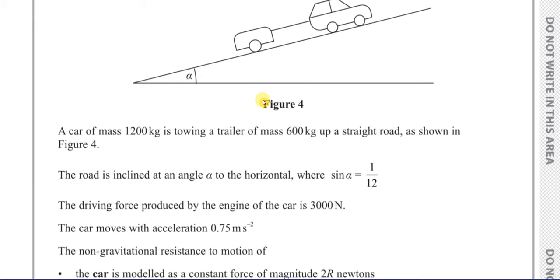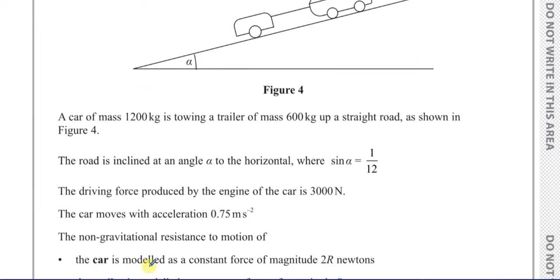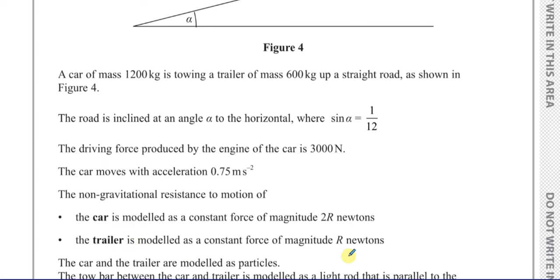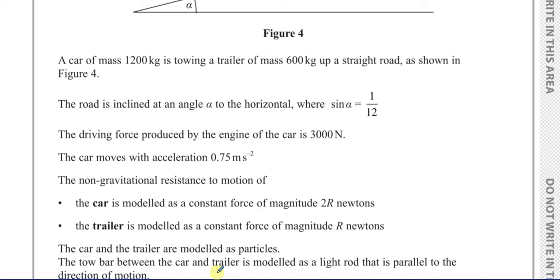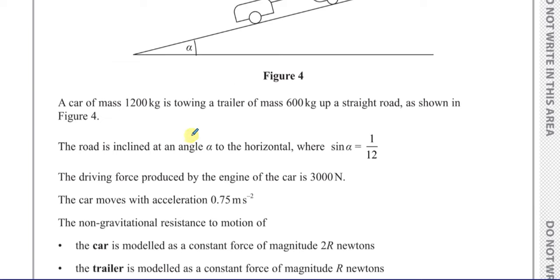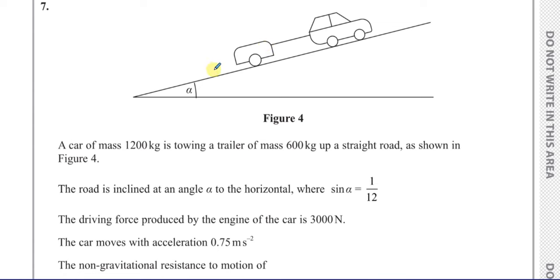The non-gravitational resistance to the motion of the car is modeled as a constant force of magnitude 2R newtons. The resistance to motion on the trailer is modeled as a constant force of magnitude R newtons. The car and trailer are modeled as particles. The tow bar between the car and trailer is modeled as a light rod that is parallel to the direction of motion — parallel to the road, basically.